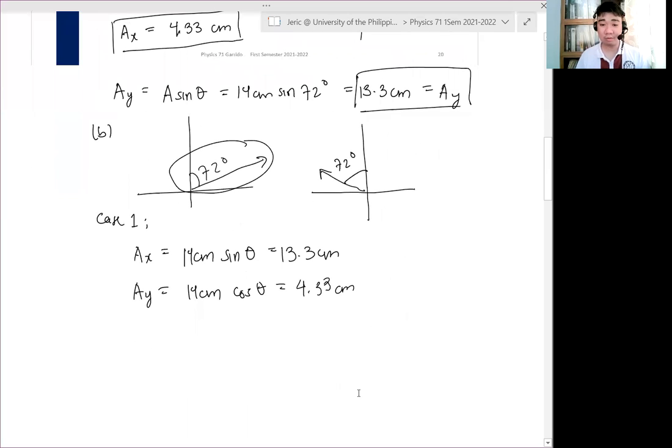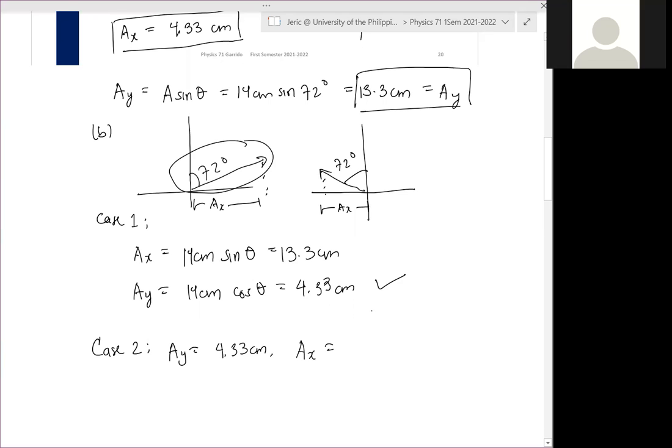How about case two? For case two, what happens? The x-axis, what happens is like you reflected. So this is your Ax earlier. This is now your Ax now. And hence, the Ay won't change. It's still the same Ay. So Ay is still 4.33 cm. But Ax now is what? Negative 13.3. Yes, it's now minus 13.3 cm. Okay? Questions? Are there any questions in this particular example?